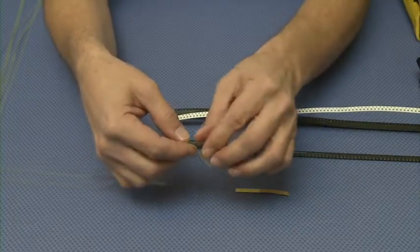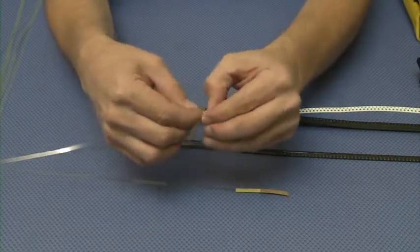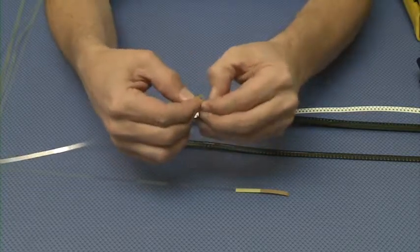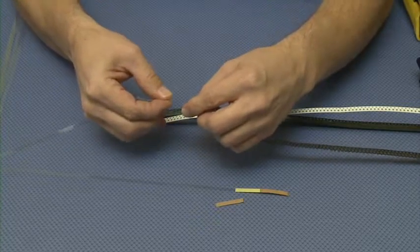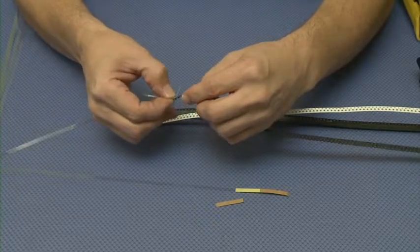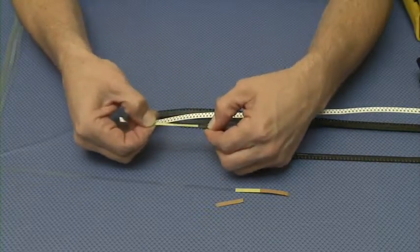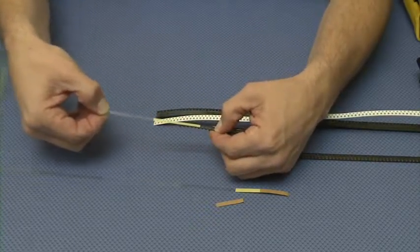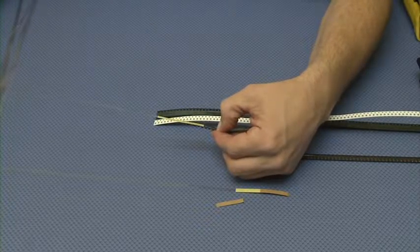With this leader tape extender, it will allow you to place a leader on the partial reel, which will allow you to run this through the machine without having to peel any components back. It gives you 20 inches of material to be able to feed through your machine.